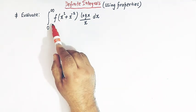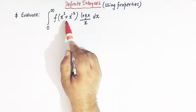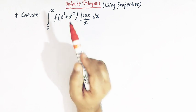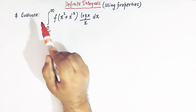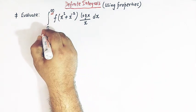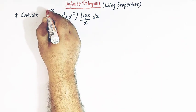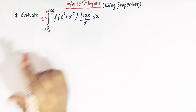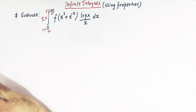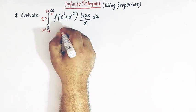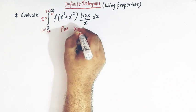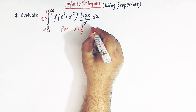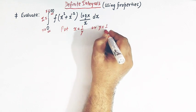In the integrand we have a function f of x squared plus x raised to minus 2. The limits go from 0 to infinity. Let us call this integral as I. In order to find the value of this integral, we'll first make use of the method of substitution. We'll use the substitution x is equal to 1 over y.